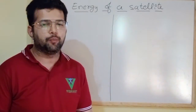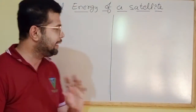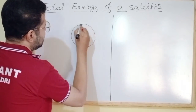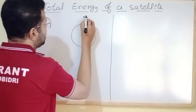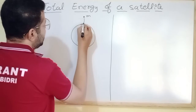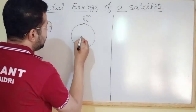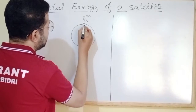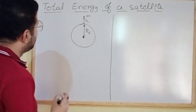Hi dear students, in this small video we are going to derive an expression for total energy of the satellite. This is Earth, and here there is a satellite of mass M which is at a height h from the center of the Earth. Its distance from the center would be the radius of the Earth plus the height.